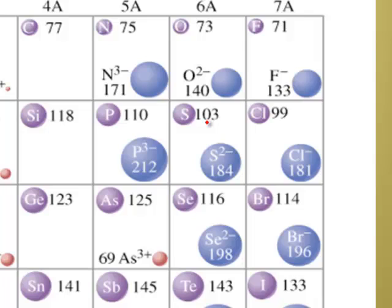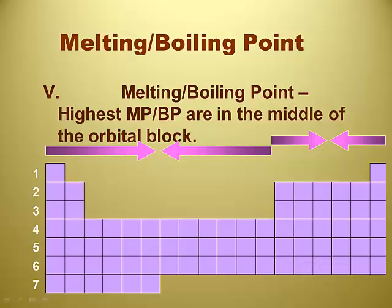Notice what's missing: the noble gases. No ionic radius, because it's really difficult to make them ions. Melting and boiling point — here's one where we just want to know the trend; we don't need to know the reasoning behind it. Melting and boiling points tend to get bigger as you go into the middle of each section of the periodic table. Metals tend to be harder to melt in the middle of the D block, and non-metals tend to be harder to melt in the middle of the P block.